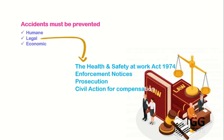Next are legal reasons. There are various policies and laws, such as the Health and Safety at Work Act 1974, because failures can lead to enforcement notices issued to the company, prosecution of the head of the company or employers, and civil actions for compensation for accidents and offences.